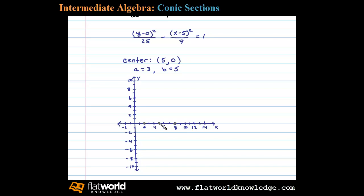Then from the center, we'll mark two points vertically 5 units. So from the center, moving 5 units, we'll have a point here and a point here. These are actually going to be the vertices of the hyperbola.